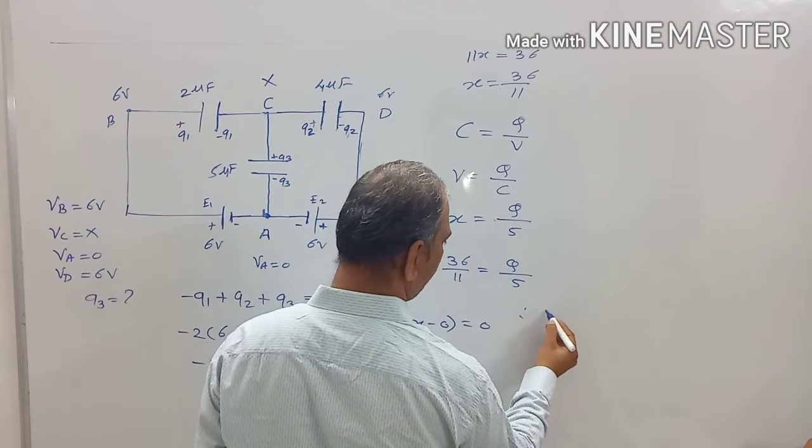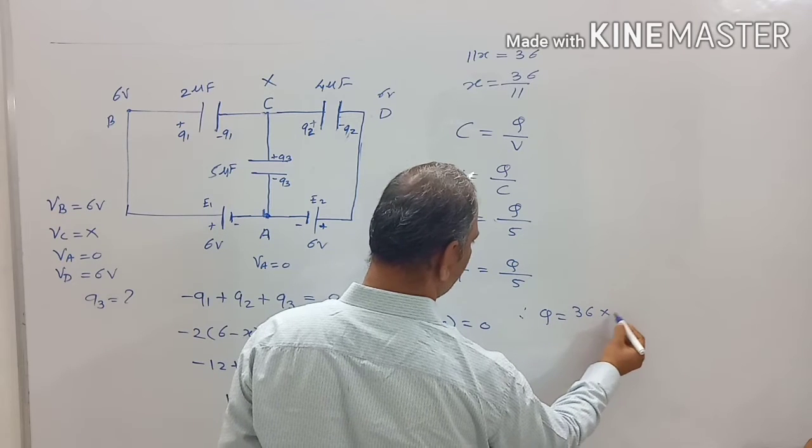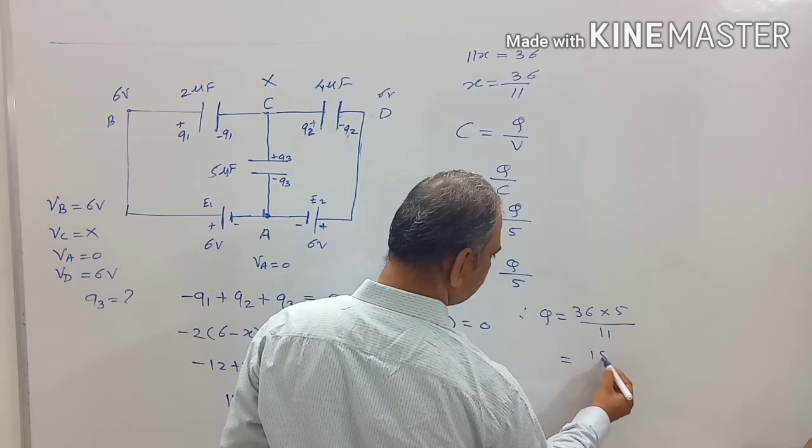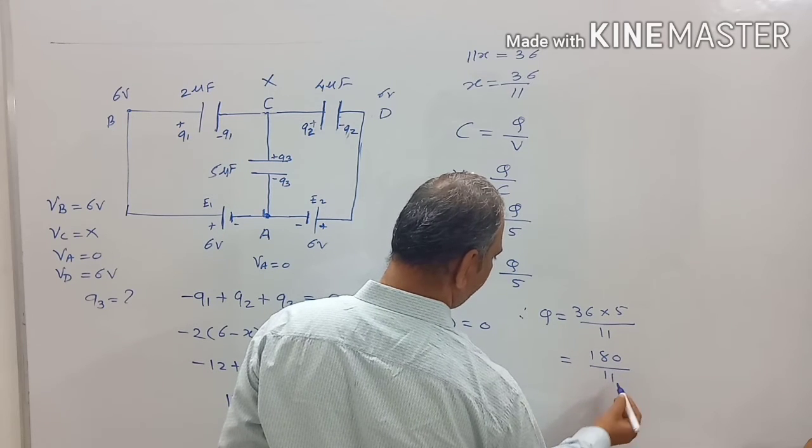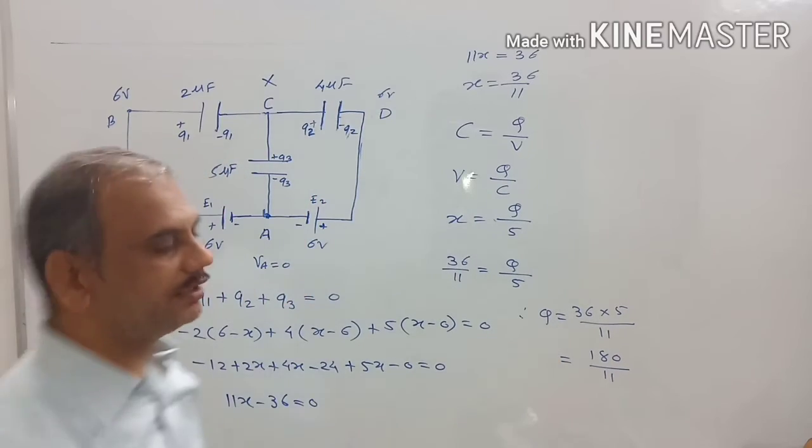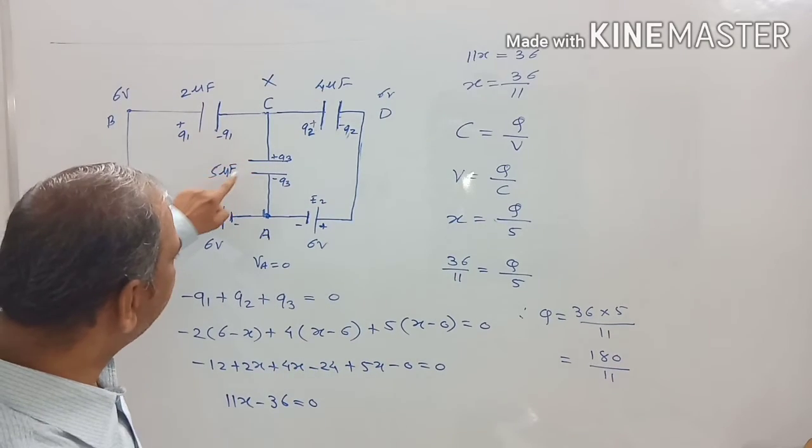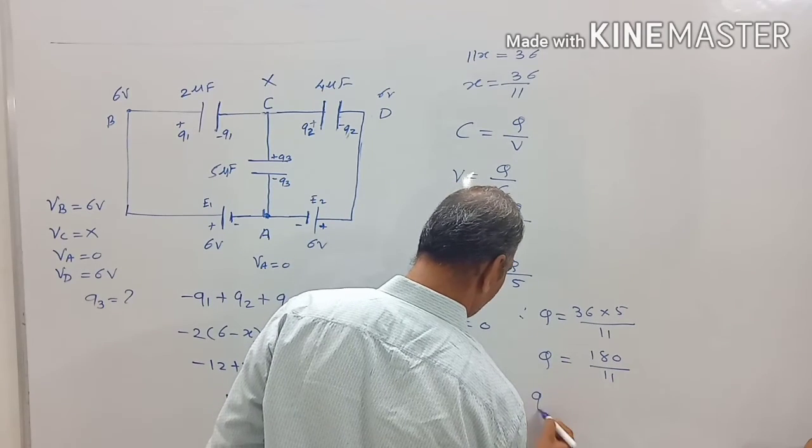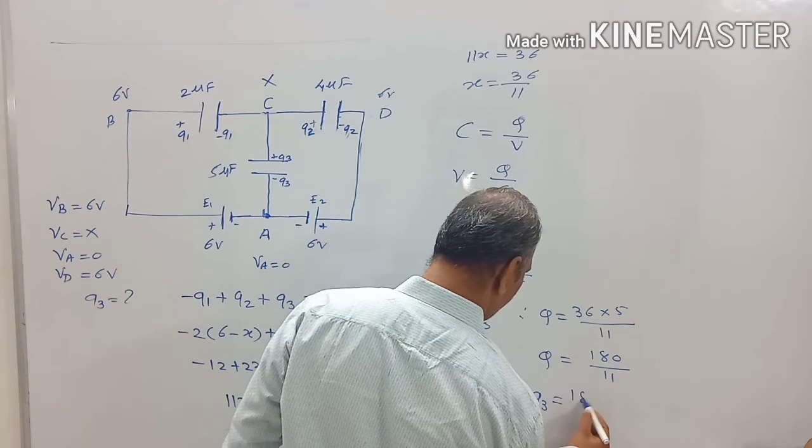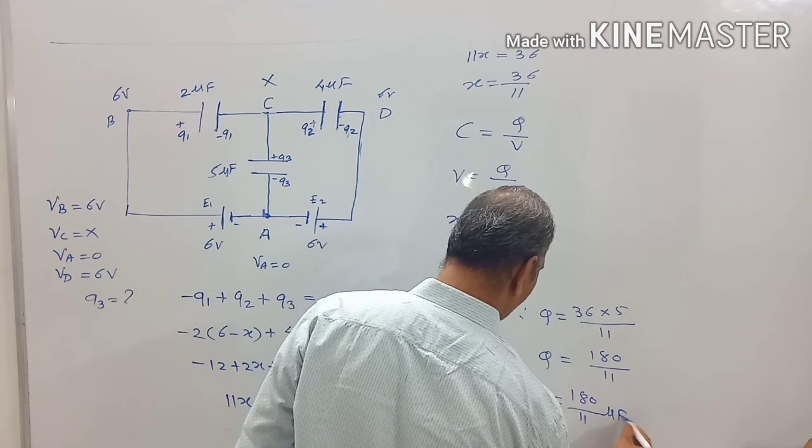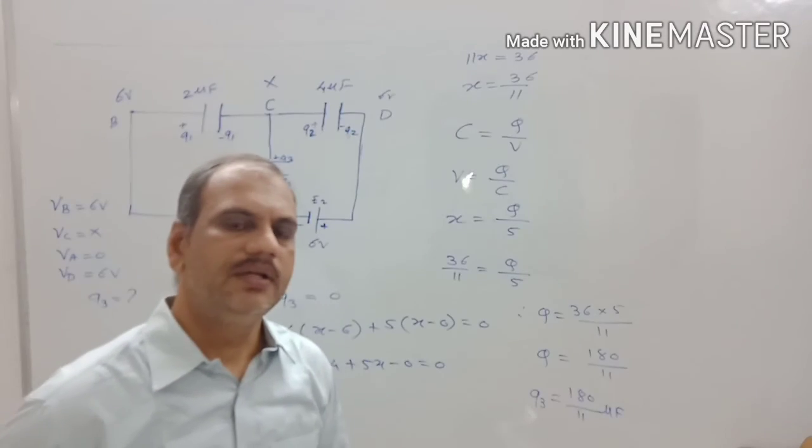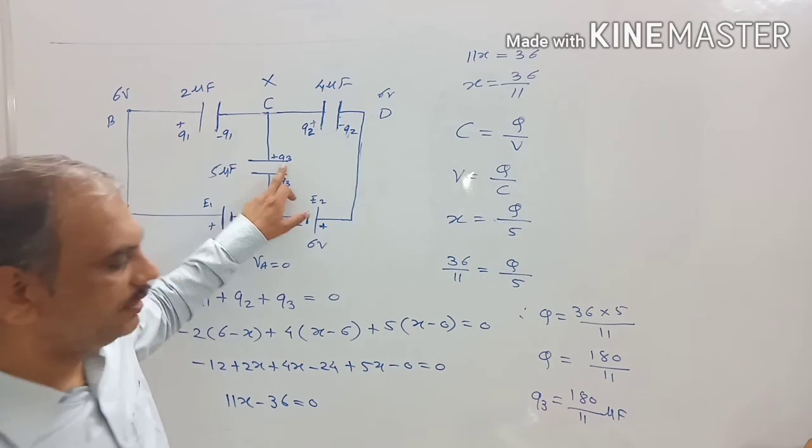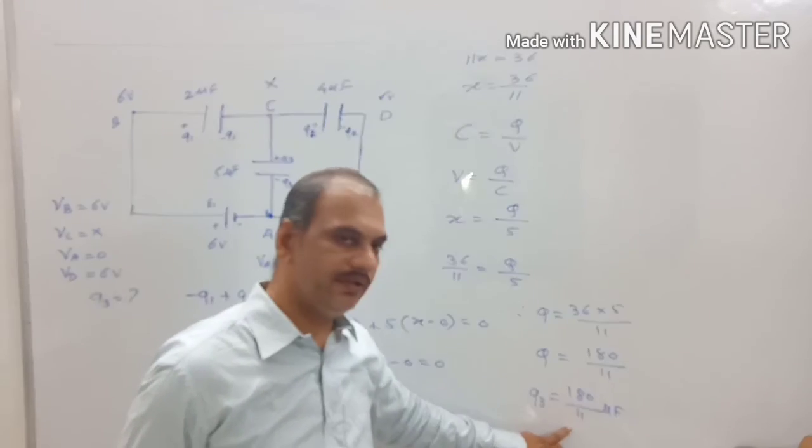Therefore, Q equals to 36 multiplied by 5 divided by 11. It is equal to 180 divided by 11. What is nothing but Q? Q is nothing but the charge on the plate of the condenser third. So here, Q3 it is equal to 180 upon 11 microfarad. In this way, we can solve this such type of numerator. So the charge on the plates of the condenser is equal to 180 upon 11 microfarad.